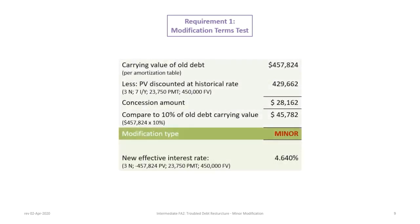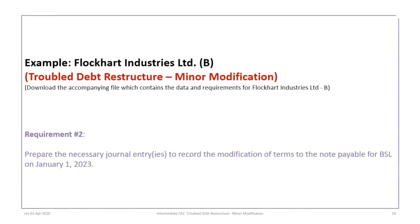Next we recompute the new effective interest rate, which we'll need for the revised amortization table. Using 3N, with the present value of $457,824 (remember to toggle the plus/minus), payment of $23,750, and future value of $450,000, and solving for I/Y, we get 4.64%. We can now proceed with Requirement Two: preparing journal entries to record the modification of terms to the note payable for BSL on January 1st, 2023.